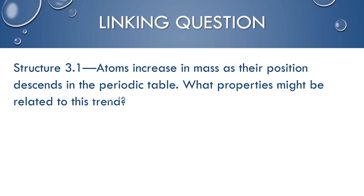This links forward to structure 3.1, where we look at periodic trends. Atoms increase in mass as their position descends in the periodic table, because they have more protons and more neutrons in their nucleus. The periodic table is always ordered from the fewest protons to the most as you go through it. As mass increases, properties like ionization energy may increase as well — especially for elements in the same period, where more protons create stronger Coulombic attractions.